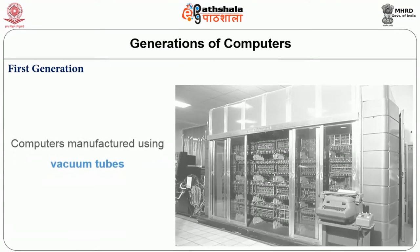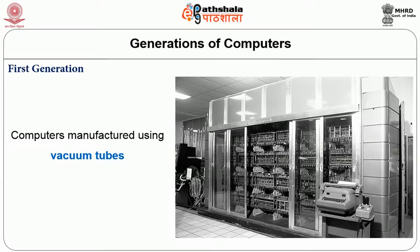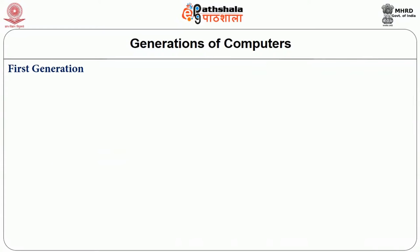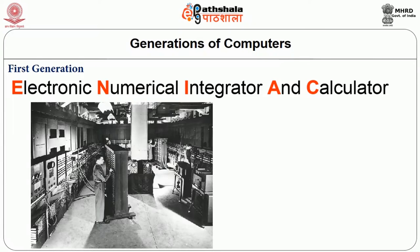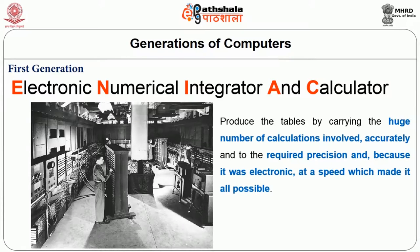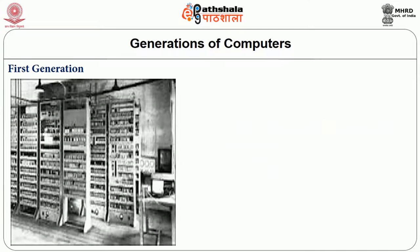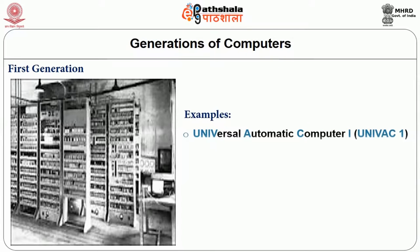First generation: the computers manufactured using vacuum tubes are called first generation computers. ENIAC — Electronic Numeric Integrator and Calculator — was the first such computer. It was able to produce tables by carrying out a huge number of calculations accurately and at electronic speed. UNIVAC 1, IBM 360, and IBM 701 are some examples of first generation computers.